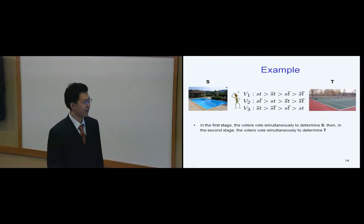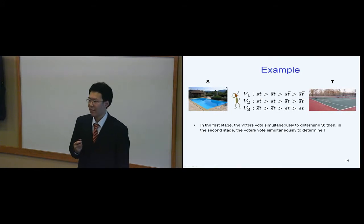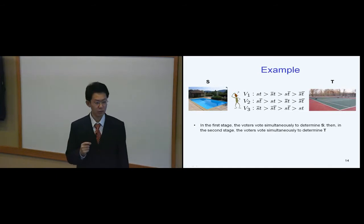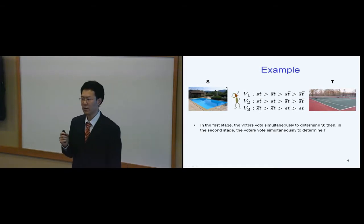Now let me show you an example to illustrate our model of strategic sequential voting. Suppose we have three voters whose preferences look like this, and they're going to vote to decide the value of two issues. The first issue is whether or not should we build a swimming pool, and the second issue is whether or not should we build a tennis court.